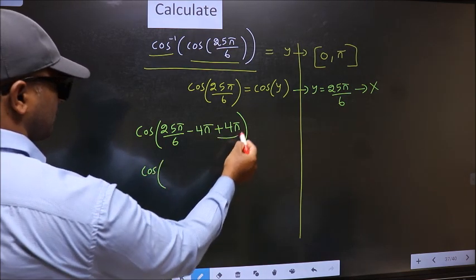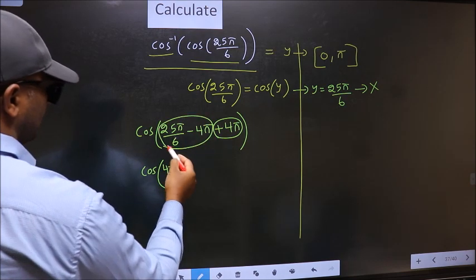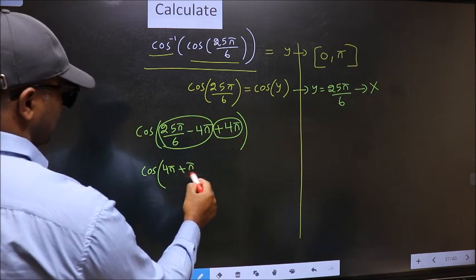Cos. Now this 4 pi I write at the start. This you calculate 25 pi by 6 minus 4 pi. We get plus pi by 6.